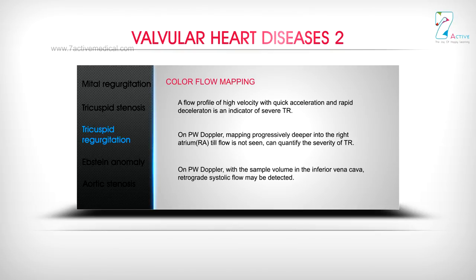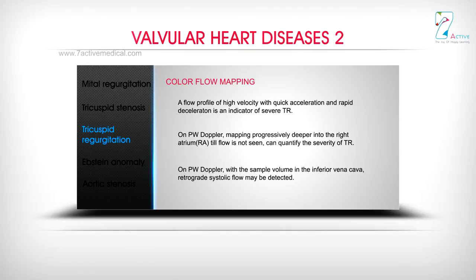On CW Doppler, mapping progressively deeper into the right atrium until flow is no longer seen can quantify the severity of TR. On CW Doppler with the sample volume in the inferior vena cava, retrograde systolic flow may be detected.